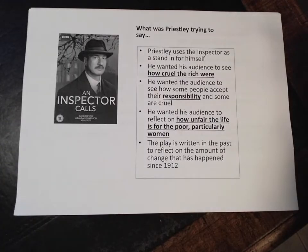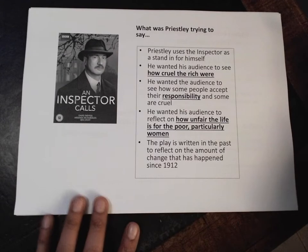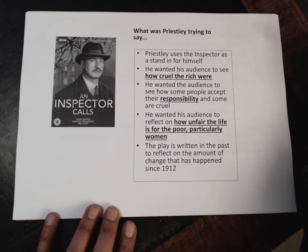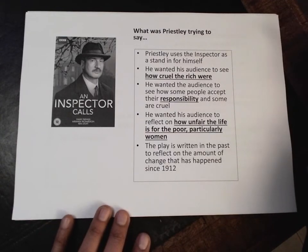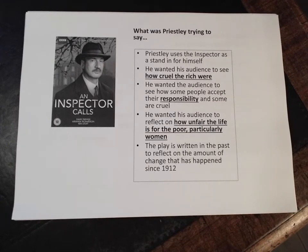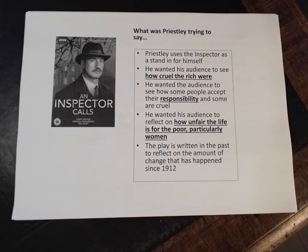What was Priestley trying to say? He was politically sympathetic with socialism, and in many ways the inspector can be seen as a stand-in for himself. He wanted to show the audience how cruel the rich were. Mr. Burling won't pay his workers properly and fires the striking Eva Smith. Sheila Burling gets Eva fired because she laughed in a store. Gerald, while being mildly kind to Eva Smith, nonetheless does to some extent use her. Mrs. Burling, a wealthy head of a charity, turns her back on her. Eric physically assaults her and steals, but suffers no consequences. The rich are cruel in this play.